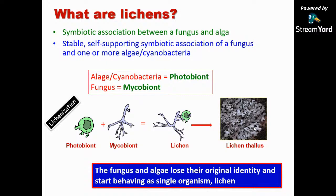In the photobiont, mostly they are green alga. Sometimes it is cyanobacteria. At a given time, there will be one primary fungus and one primary photobiont — they are called the primary associates. Once they form an association, it is a stable association. They usually don't get disassociated and they are interdependent on each other for several things in their life cycle.